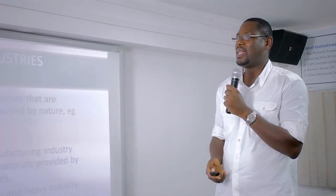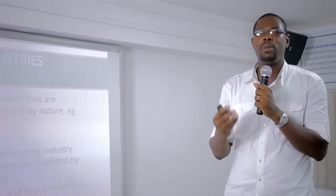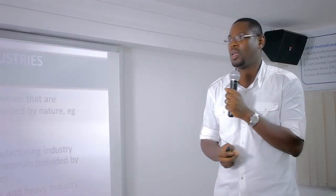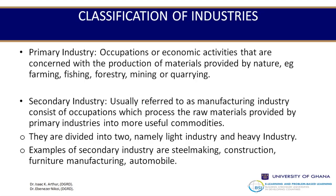We need to understand the classification of industries. First, we have primary industries — occupations concerned with the production of materials provided by nature, such as farming, fishing, forestry, mining, and quarrying. Secondary industry, usually referred to as manufacturing, consists of occupations which process the raw materials provided by primary industries into more useful commodities, and can be divided into light industries and heavy industries.